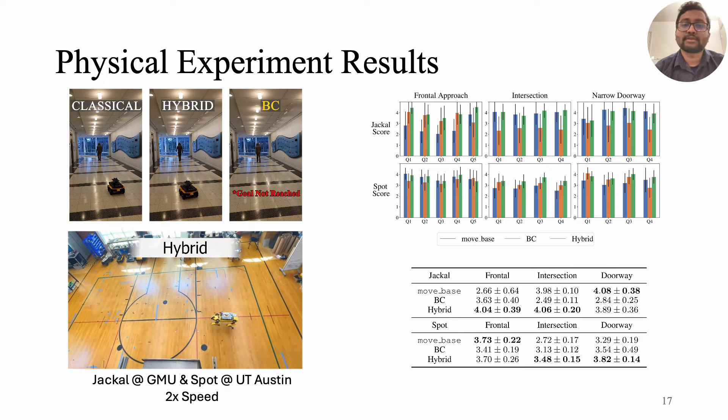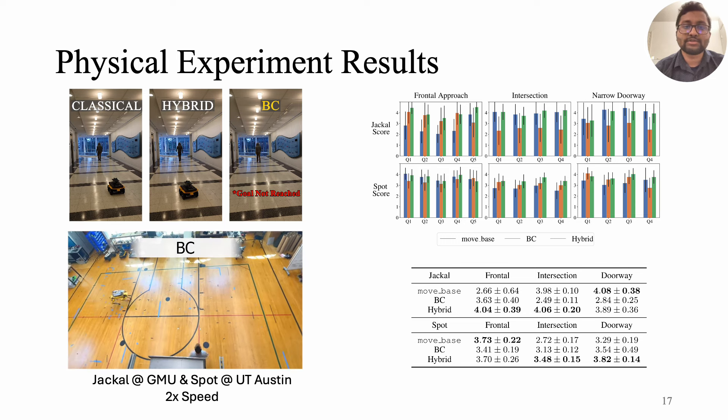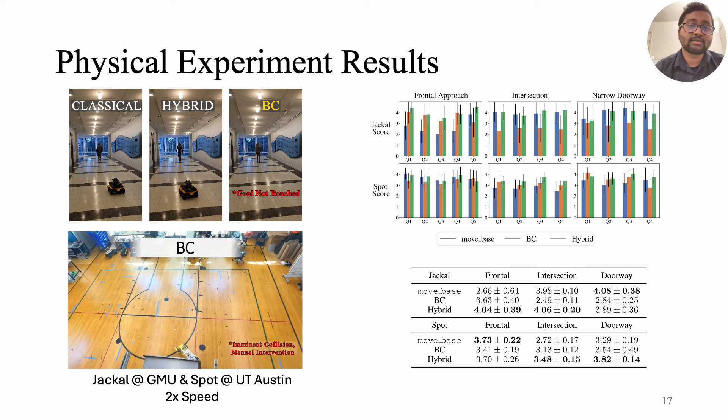The comparative results revealed that the hybrid approach generally scored higher in social compliance than purely classical or BC methods. However, in two instances, the classical approach marginally outperformed the hybrid method. This suggests that while the hybrid method is often more effective, classical strategies still hold relevance in specific contexts.